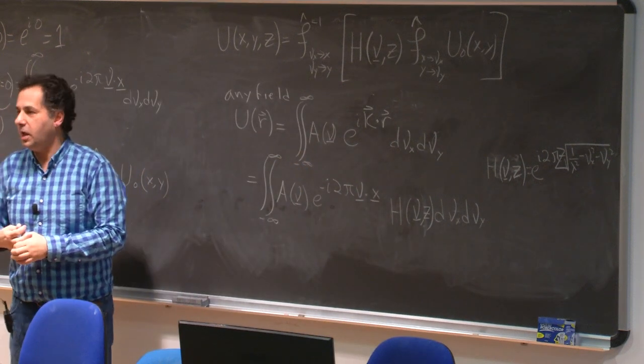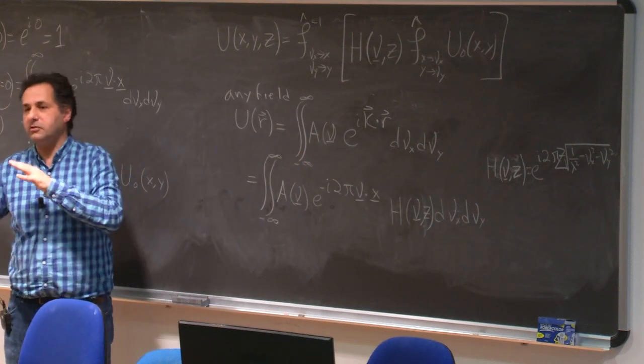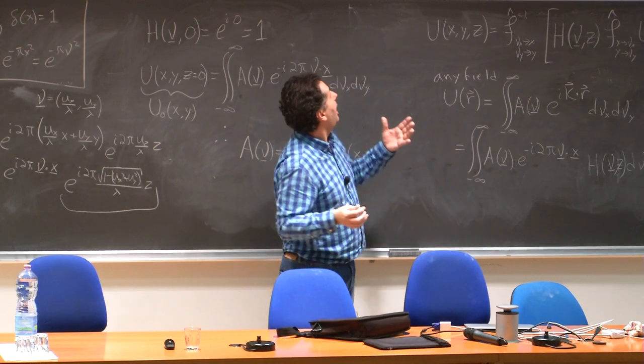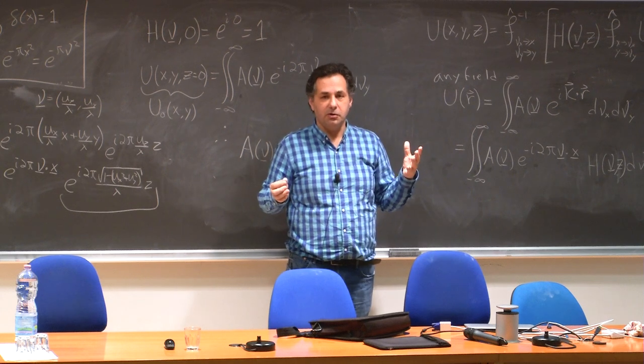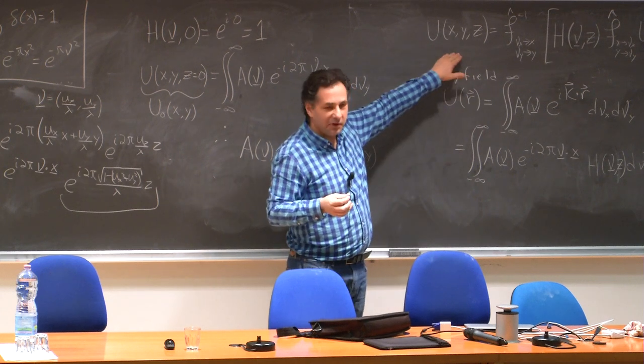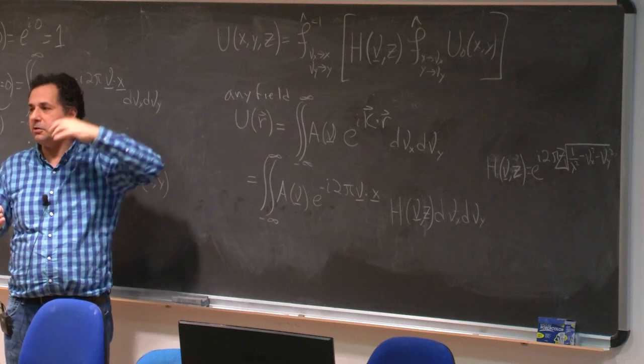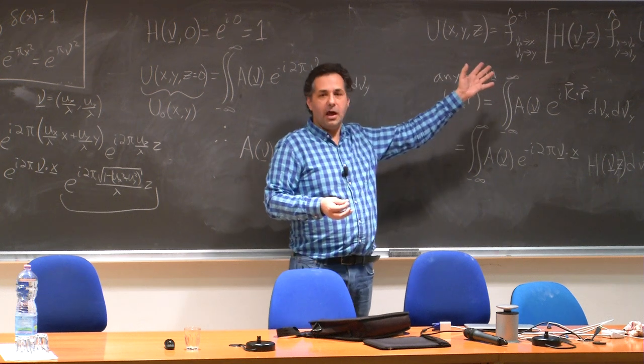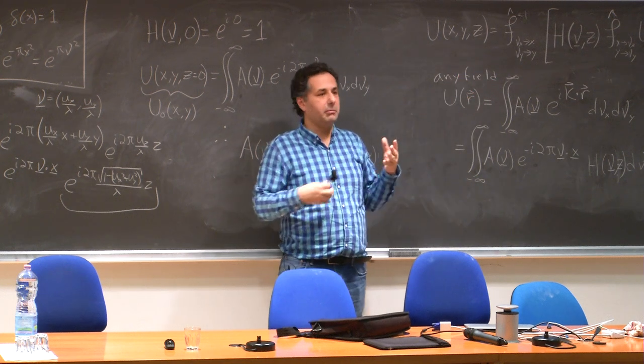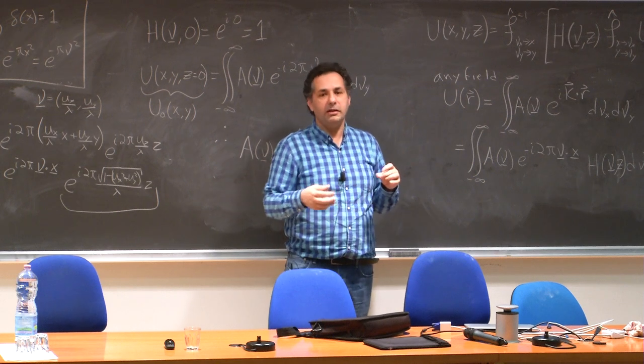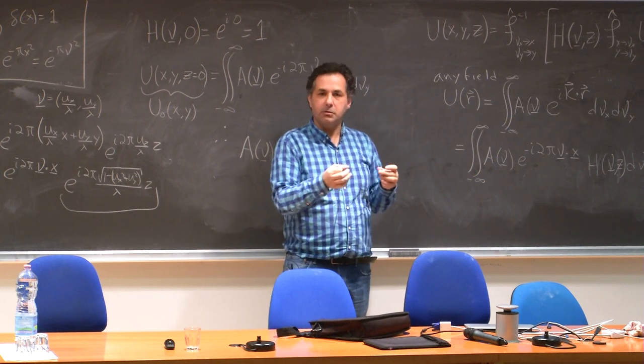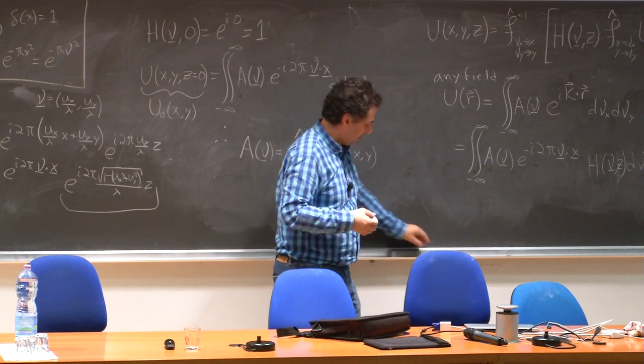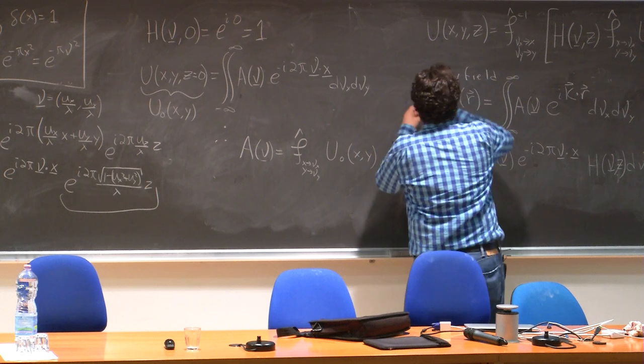So the plane waves give us this connection between solving the Helmholtz equation and Fourier theory. So I'm going to start from this tomorrow and try to interpret again the uncertainty relation and all these properties in terms of this and show you on the computer how this can be used to propagate and all the properties. And then we'll go into measuring the resolution of an imaging system. I just wanted to get to the punchline before we leave.